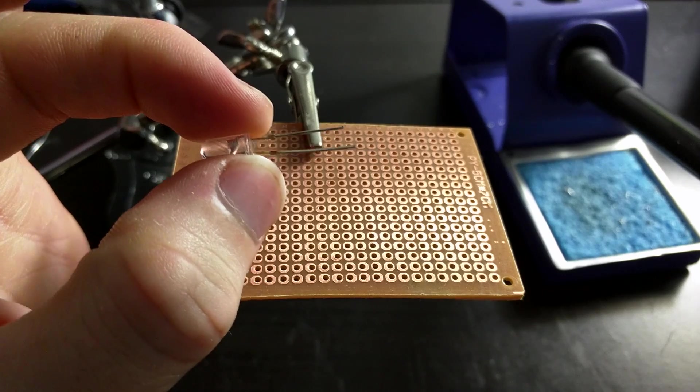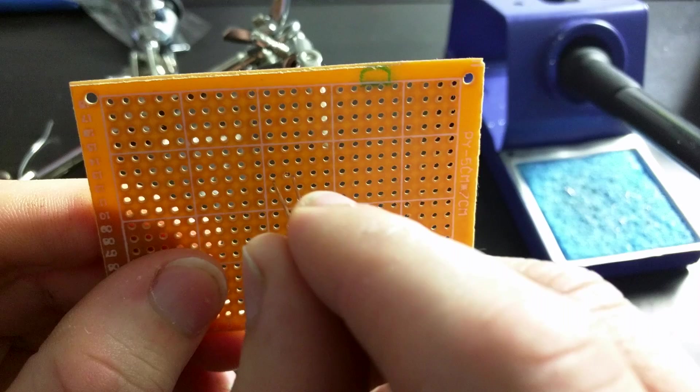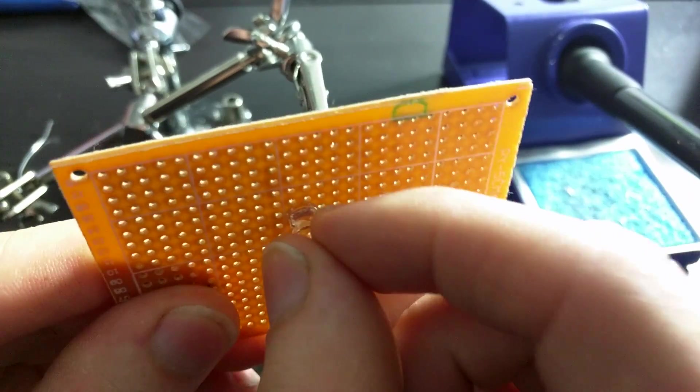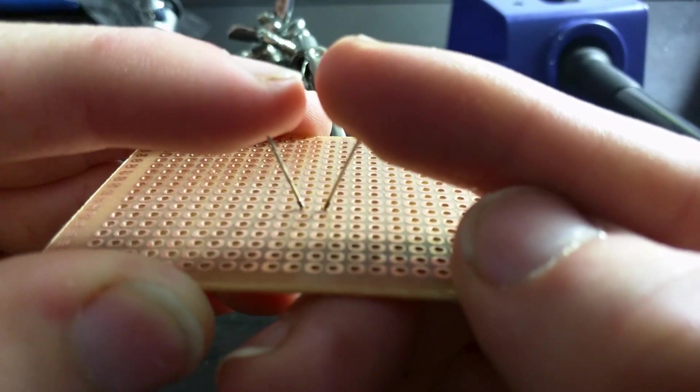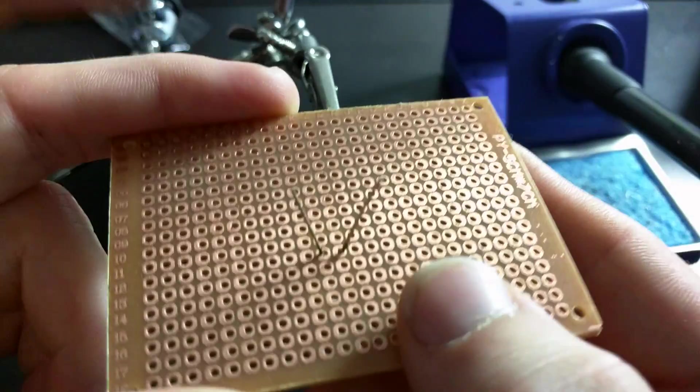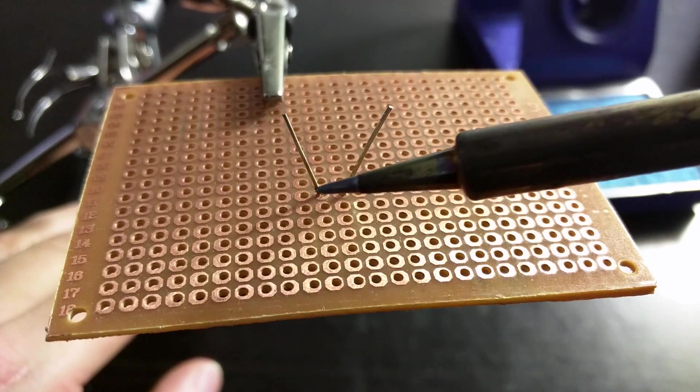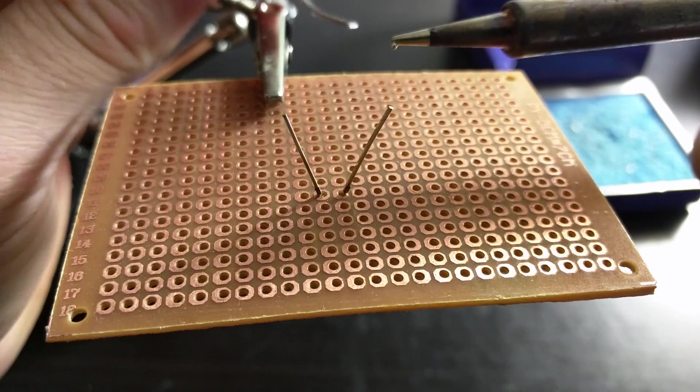My goal is to solder an LED onto this board. So what I'm first going to do is put the LED through the perforated holes, slightly part the legs of the LED to prevent them falling out, and attach it back to my helping hand. So now, I want to solder these legs to this board now that I have a clean tip on my iron.